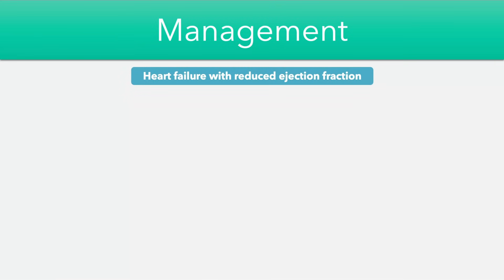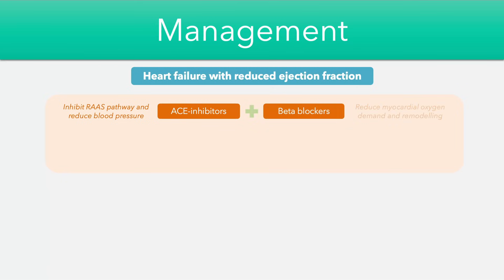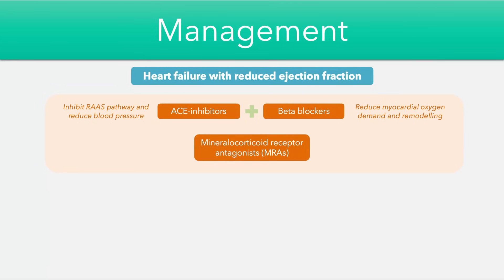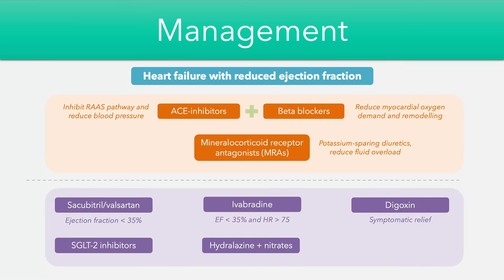For management of heart failure with a reduced ejection fraction, we start with medical management using ACE inhibitors — which inhibit the RAS pathway and reduce blood pressure — and beta blockers, which reduce myocardial oxygen demand and prevent cardiac remodeling. Following this we can consider mineralocorticoid receptor antagonists such as eplerenone and spironolactone, which are potassium-sparing diuretics that help reduce fluid overload. If these options fail, we turn towards more specialist medications routinely started by a cardiologist.